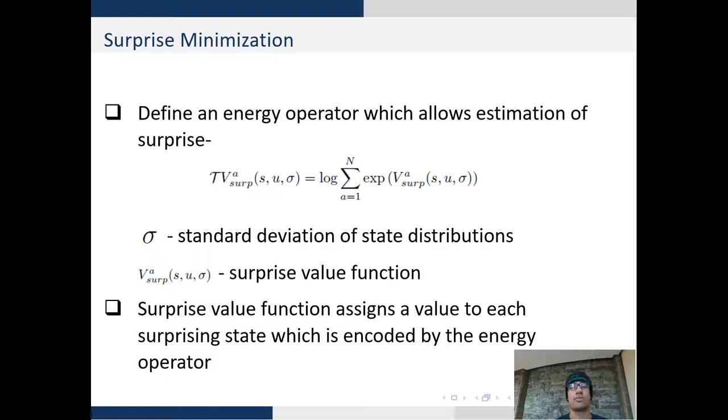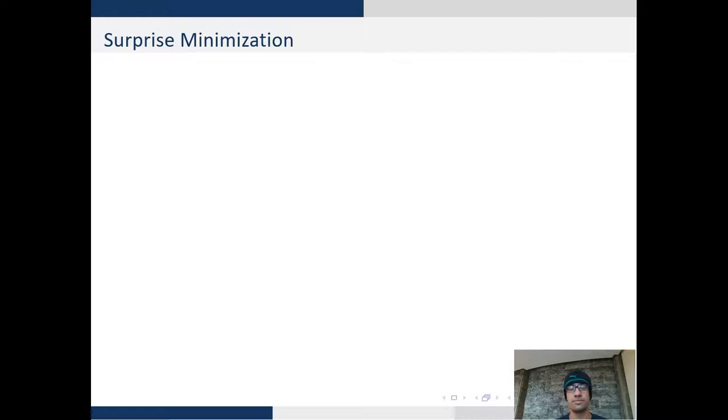This is quite similar to the Q-value function, except that instead of estimating the long-term reward, the surprise value function estimates the long-term surprise. The surprise value function assigns a value to each surprising state, which is further encoded by the energy operator.